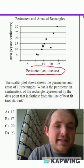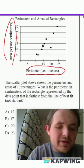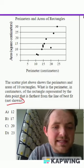So we've got the perimeter as our X and the area as our Y right there, and it tells us that there is a line of best fit that is not shown.